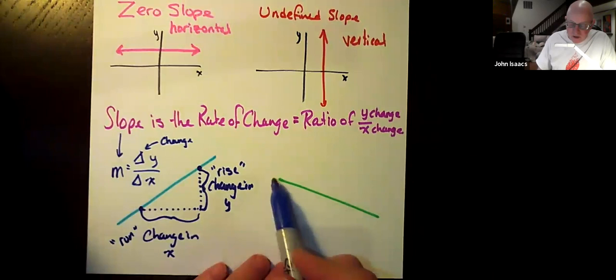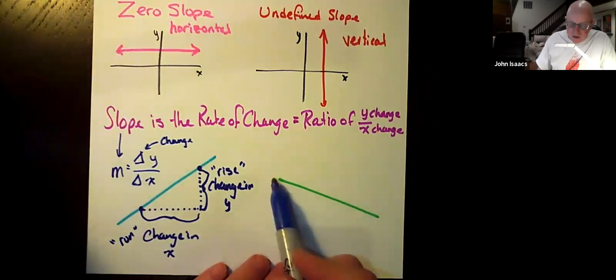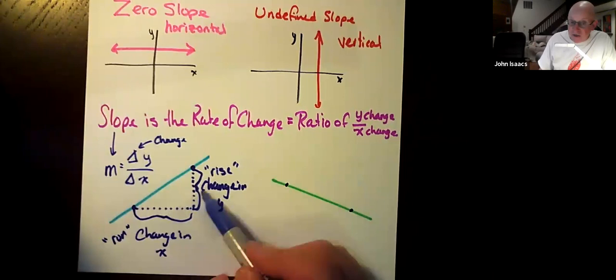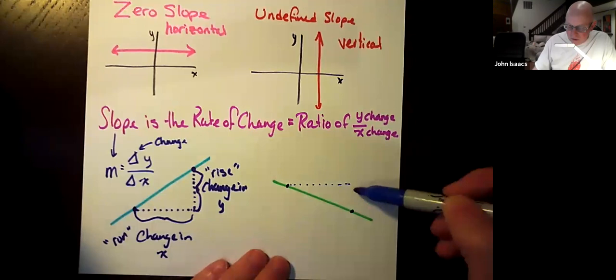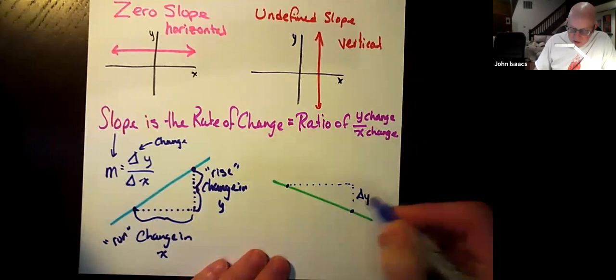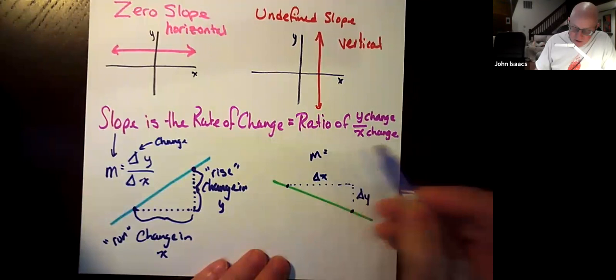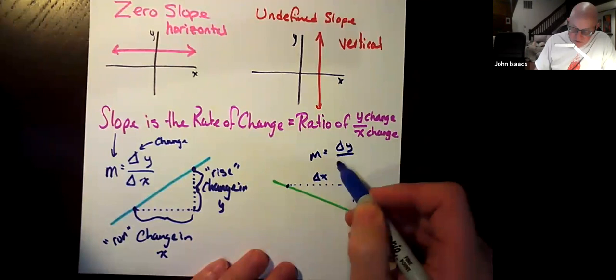You can draw this triangle on either side of the line, doesn't matter. So here we have another line, pick two points, any two points, it doesn't matter because you're dividing these two things. It's a ratio. It's a fraction. It doesn't matter where you put the two points as long as they're on the line. And here is delta y, and here is delta x.